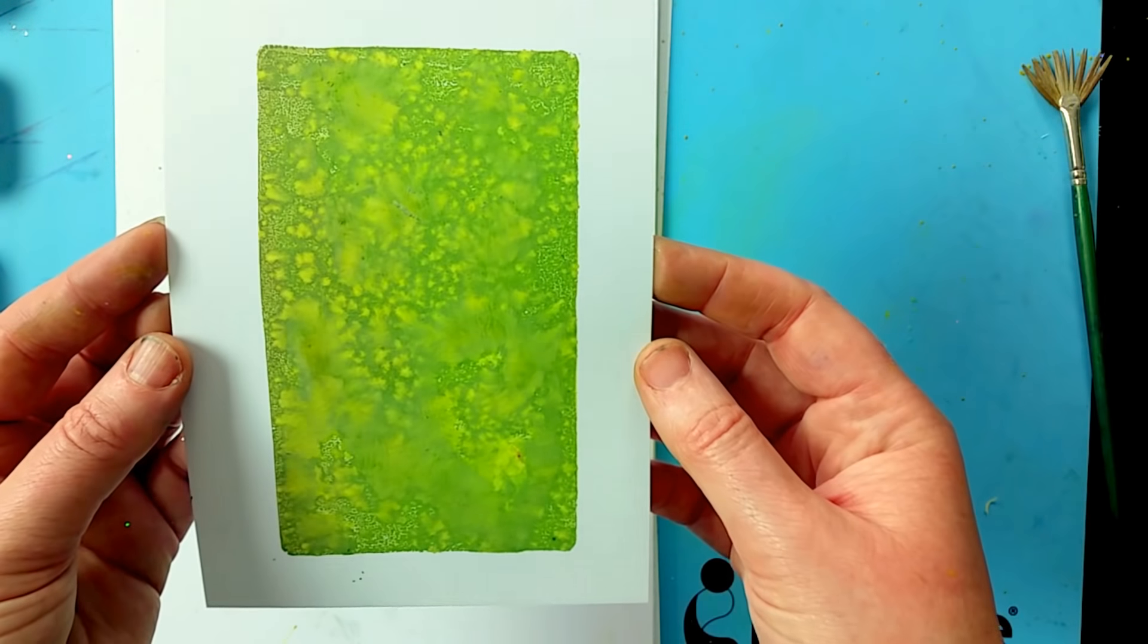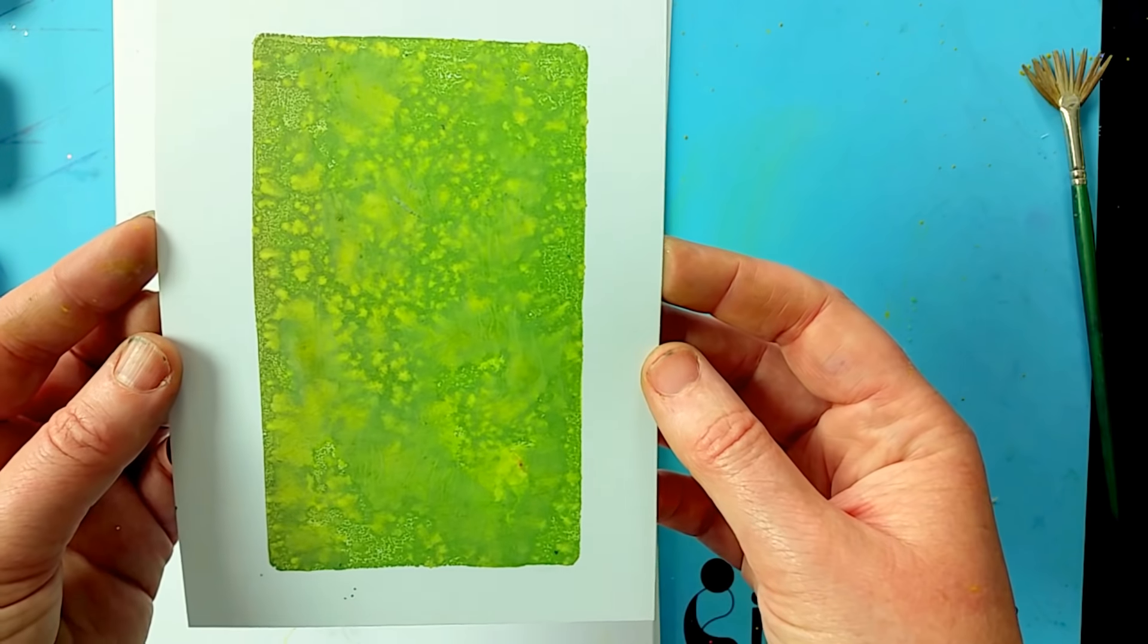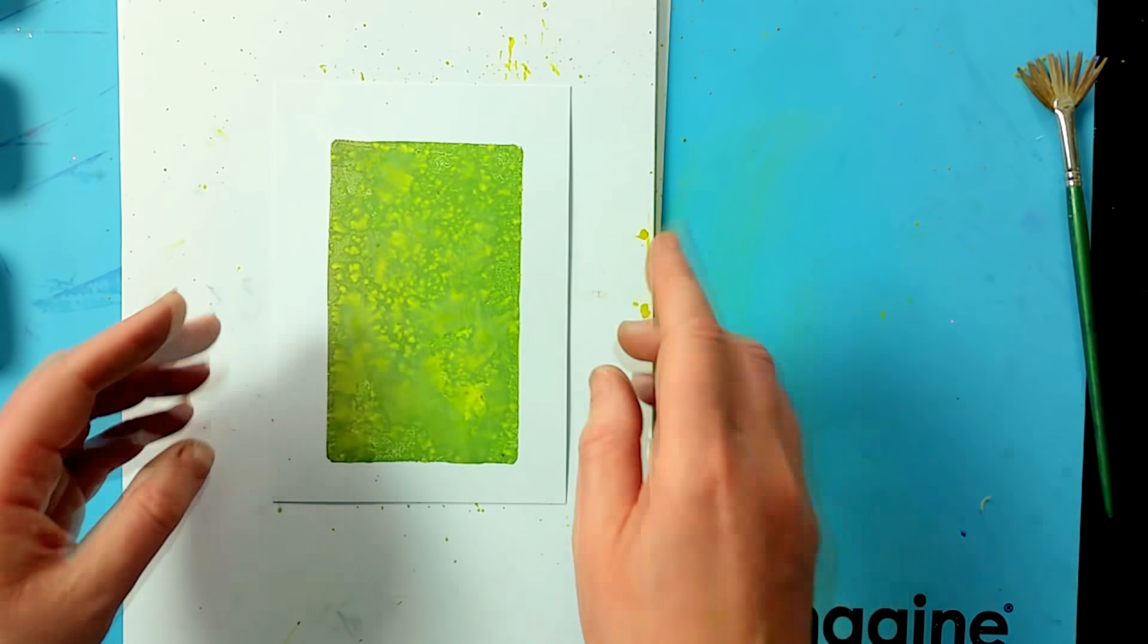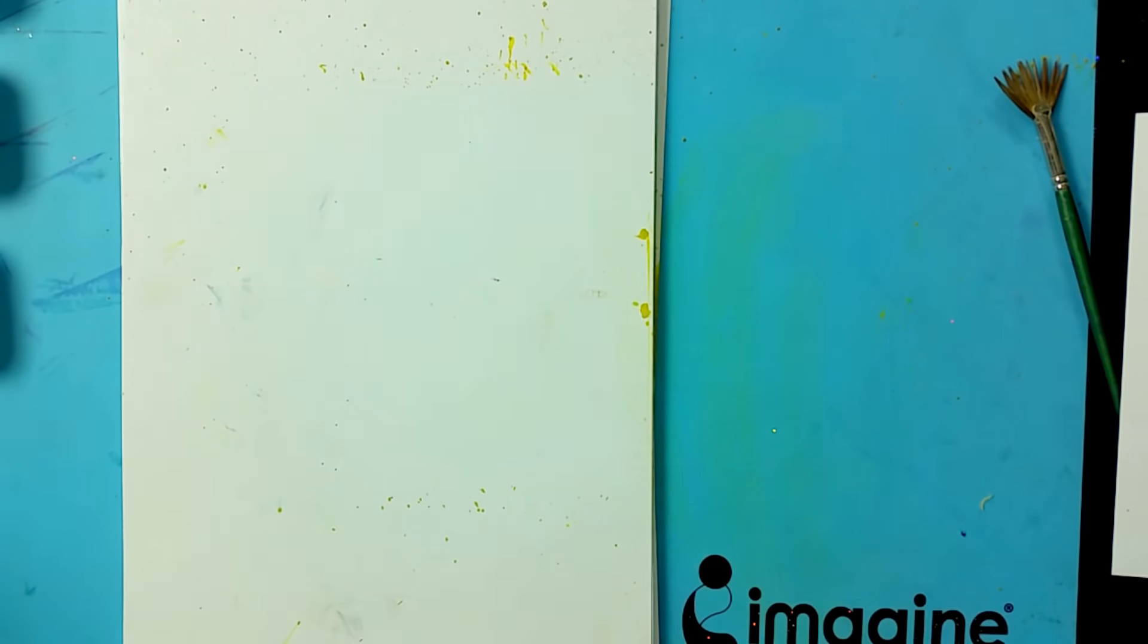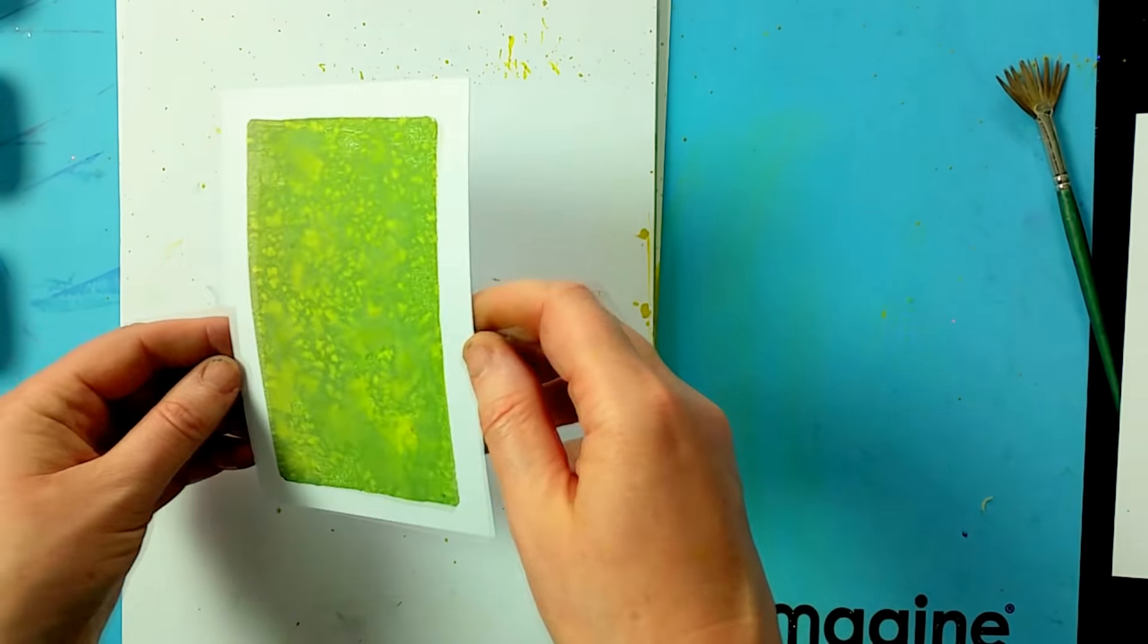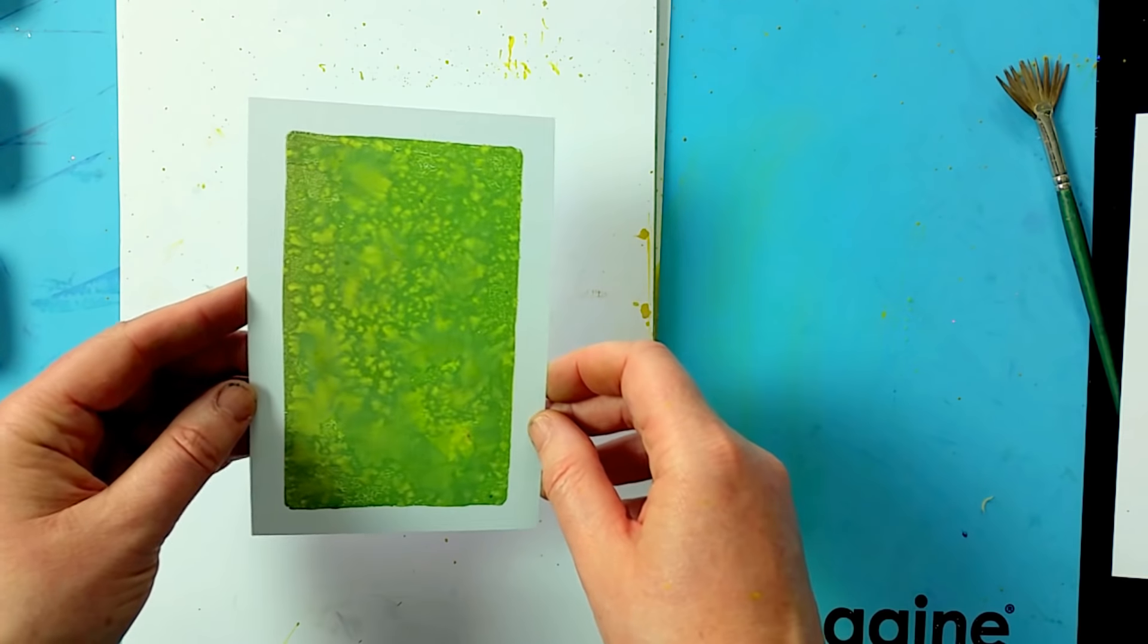I'm going to trim that down first. There we go. I've kept the edge, the border, because I want to stamp something around the edge there.